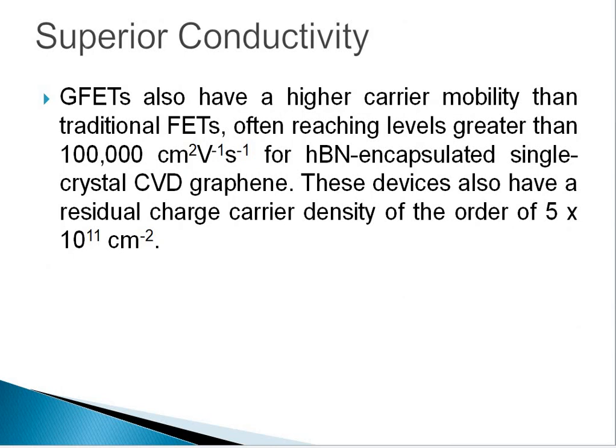Another advantage of graphene is its superior conductivity. Graphene field effect transistors also have higher carrier mobility than traditional field effect transistors, often reaching levels greater than 100,000 cm² per volt per second for hBN-encapsulated single-layer CVD graphene. These devices also have a residual charge density on the order of 5 × 10¹¹ per cm².